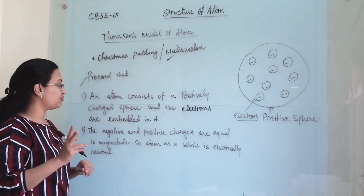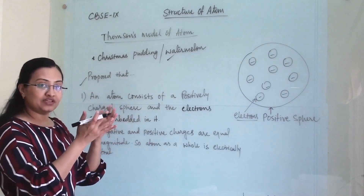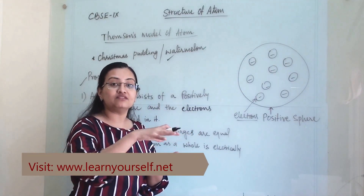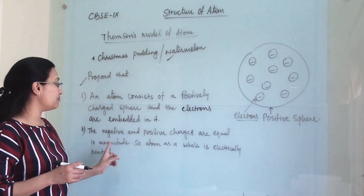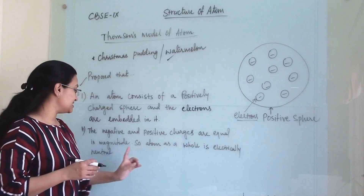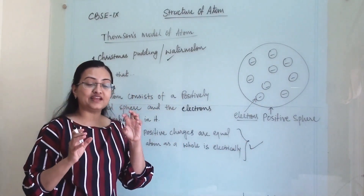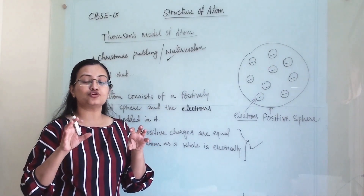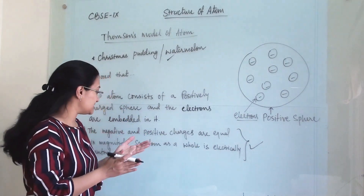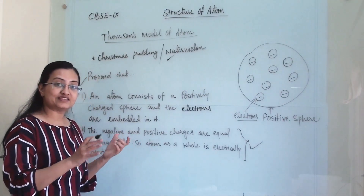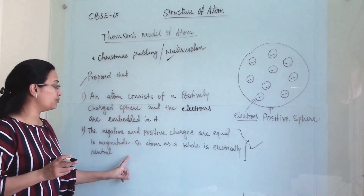Thomson proposed two main points. First, an atom consists of a positively charged sphere, and the electrons are embedded in it, evenly distributed throughout. Second, the negative and positive charges are equal in magnitude because the atom as a whole is electrically neutral — whatever magnitude the negative particles carry, the same magnitude of positive charge is also present.